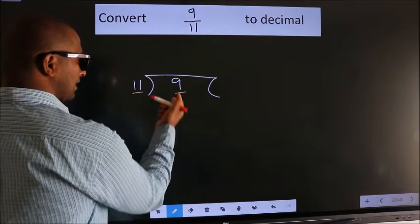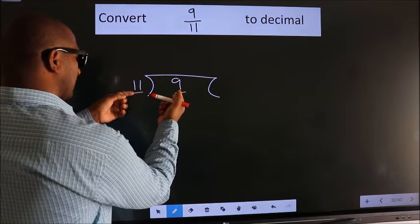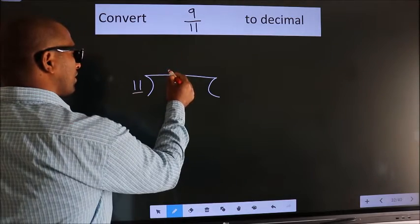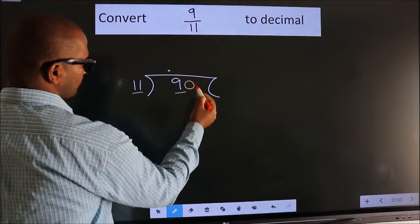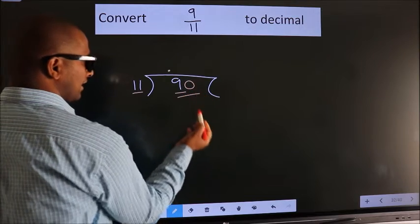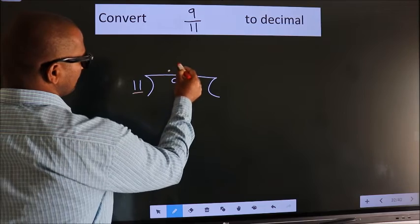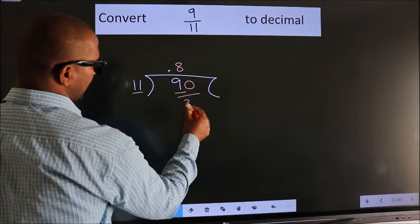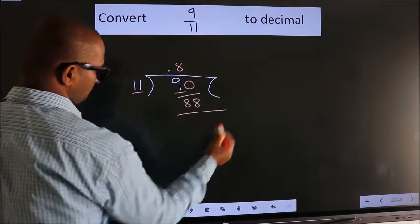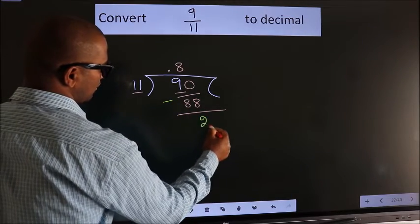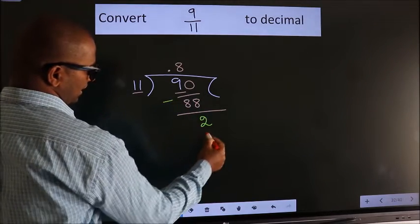9 is smaller than 11, so what we do is we put dot, take 0. So 90. A number close to 90 in 11 table is 11 times 8, which is 88. Now we should subtract. We get 2.